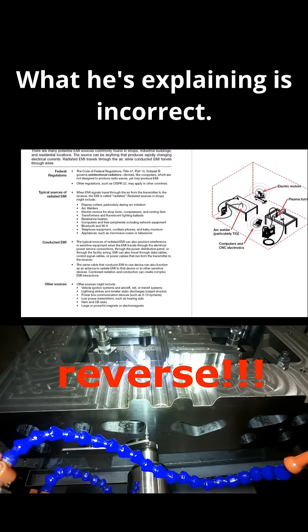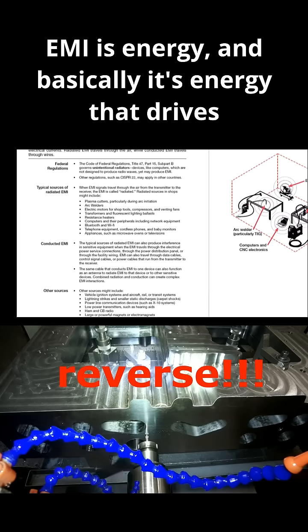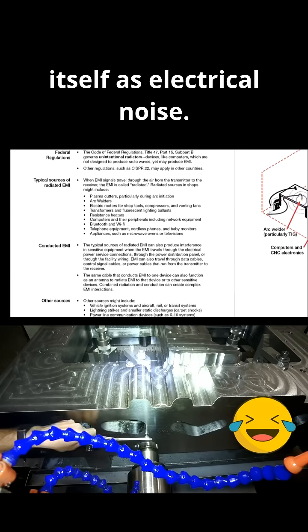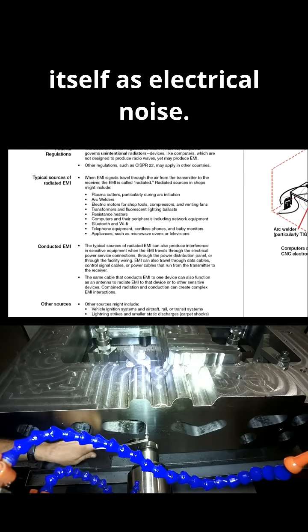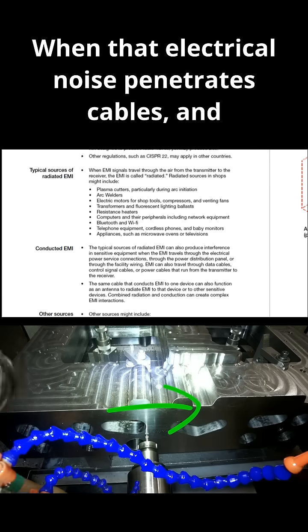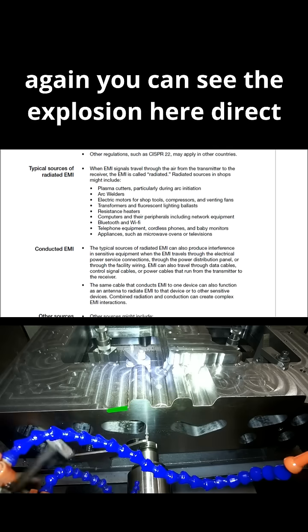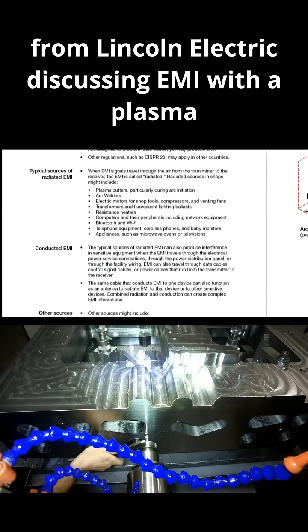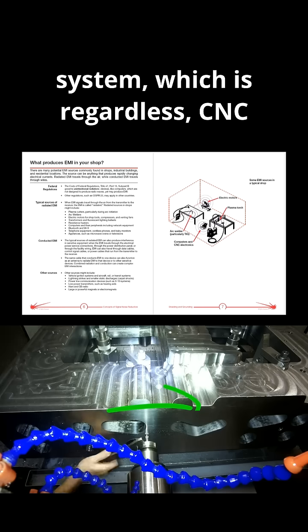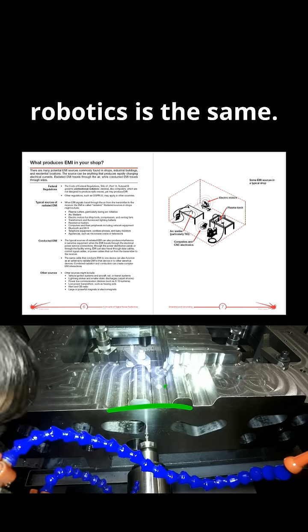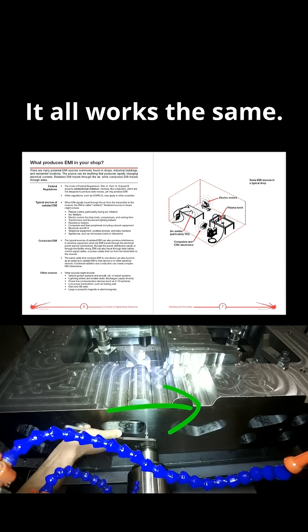What he's explaining is incorrect. EMI is energy — essentially electrical noise. When that electrical noise penetrates cables, you can see, as shown here directly from Lincoln Electric discussing EMI with a plasma system, that CNC robotics works the same way. It all works the same.